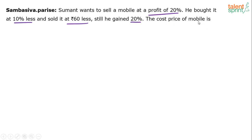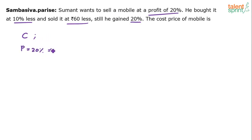How do you solve this? Very simple. Let's assume the cost price is C. He wanted to sell the mobile at a profit of 20%. If the profit is 20%, the selling price should be 120% of the cost price, which means 1.2C. The cost price is C and this is what you have to calculate.